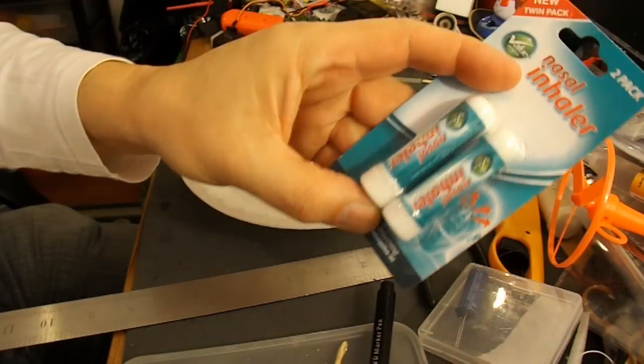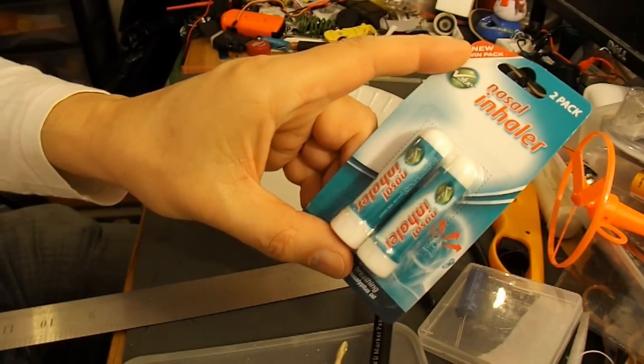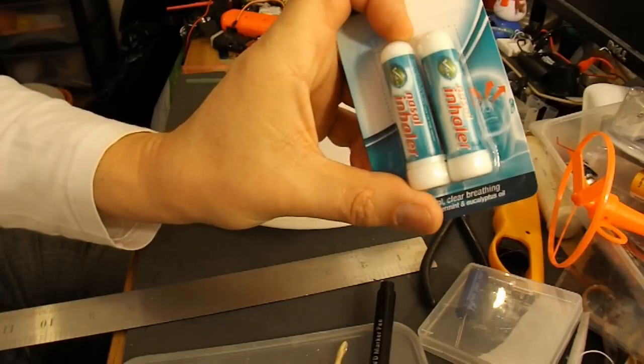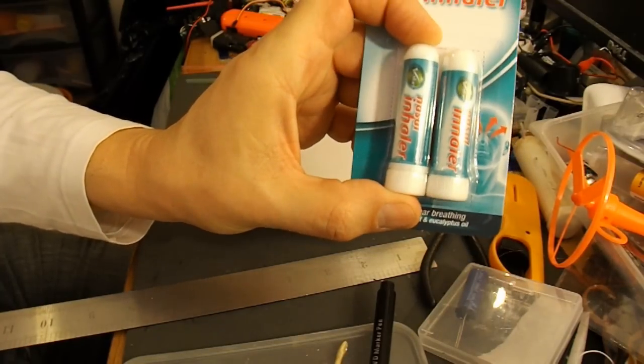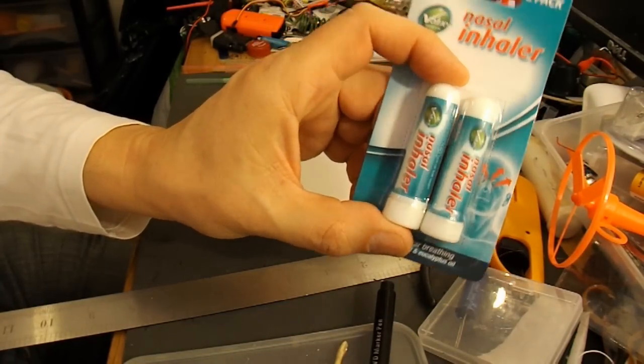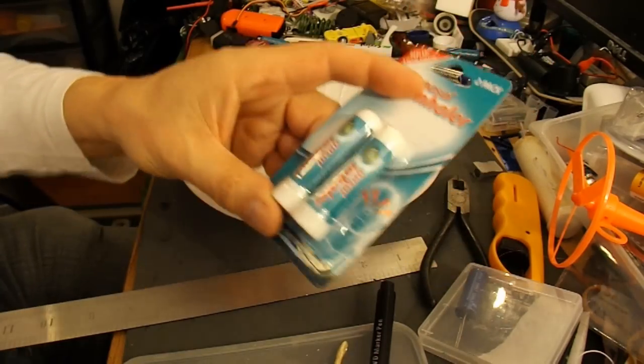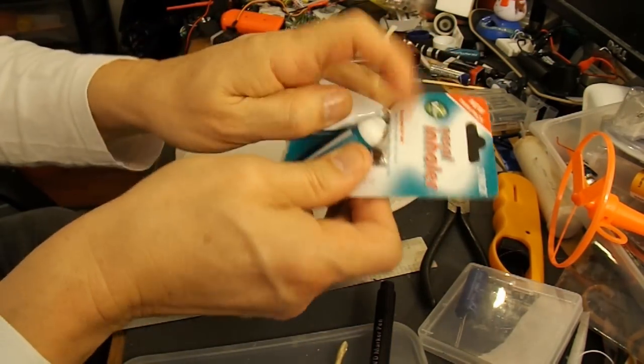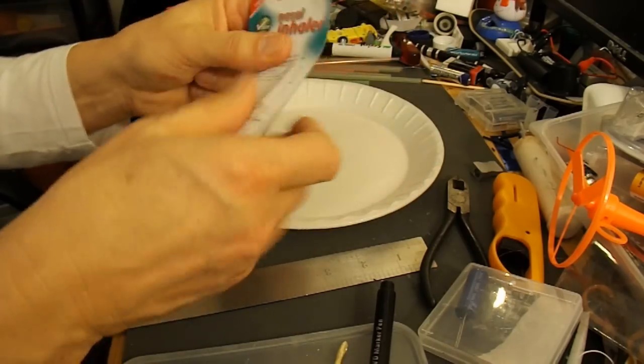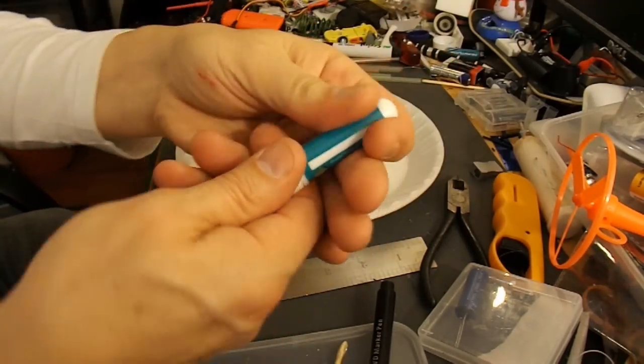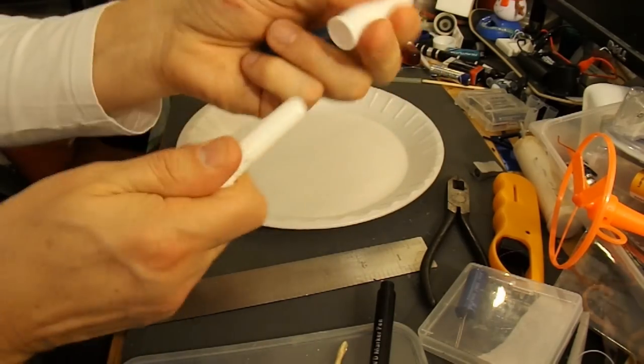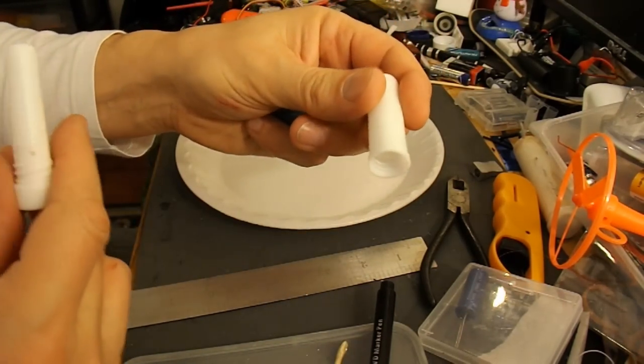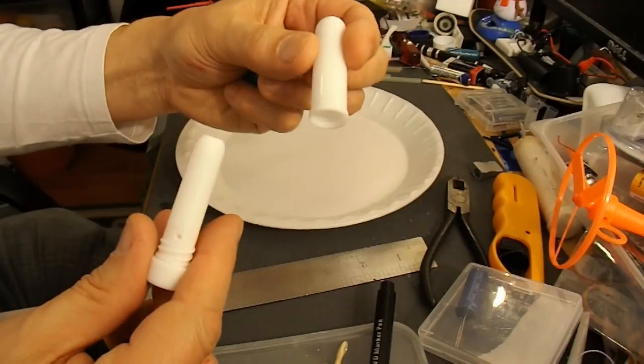I've been looking around and it looks to me like the tubes on the outside of these nasal inhalers are just about the right size for the neck of a balloon. So that's what I'm going to try. I reckon the outside of that looks about the right size.